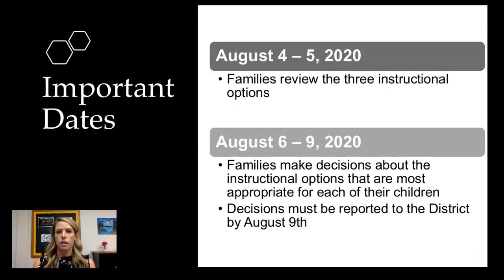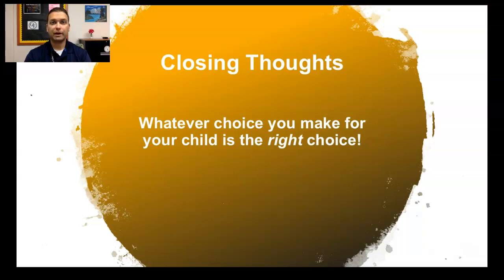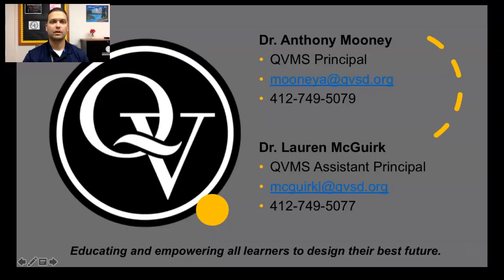Important dates for all families: between August 4th and August 5th, families should review the three instructional options available. On August 6th, families will receive a survey allowing them to choose which instructional options are most appropriate for their children. Families must complete and submit the survey to the district by August 9th. Please know that we understand the pressure you may feel in making an instructional decision for your child, but whatever choice you make is the right choice. We look forward to working together with all of our families and supporting our students as we transition to the 2020-2021 school year. If you have any questions, please feel free to reach out to either middle school administrator. We appreciate and value your time and support. Thank you for joining us.